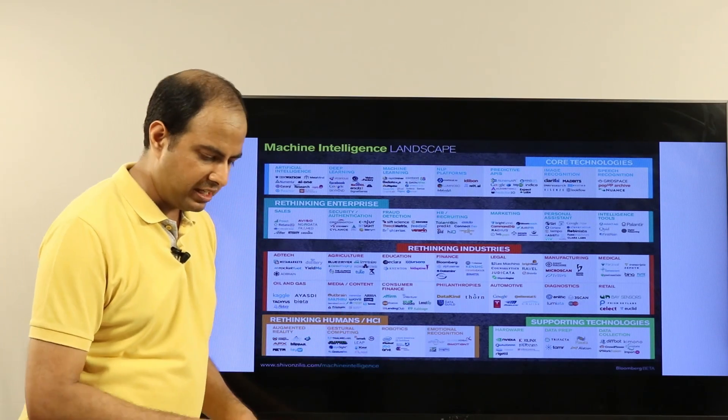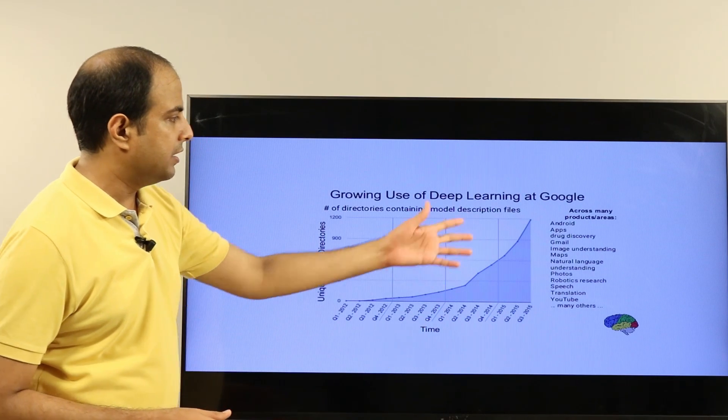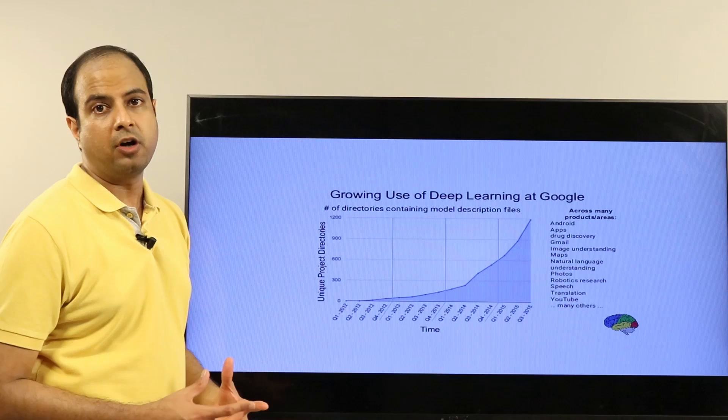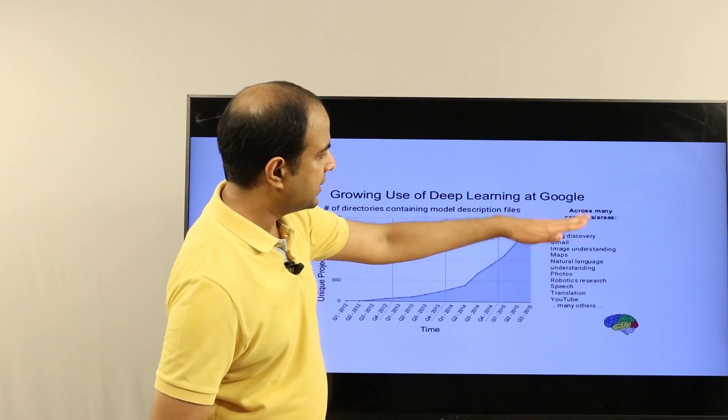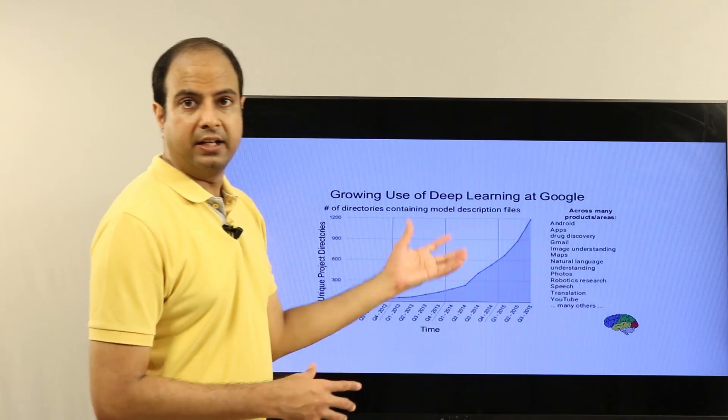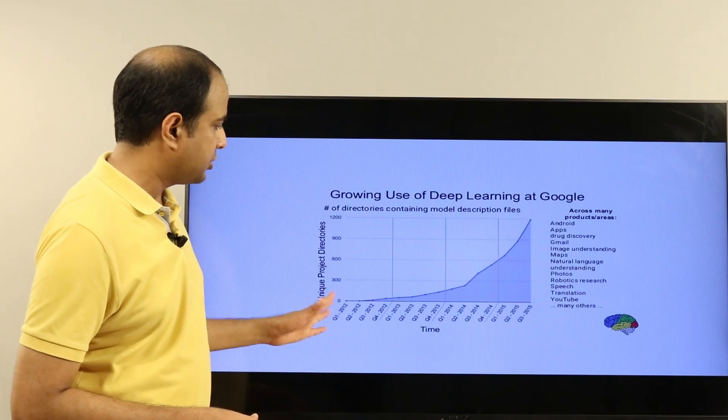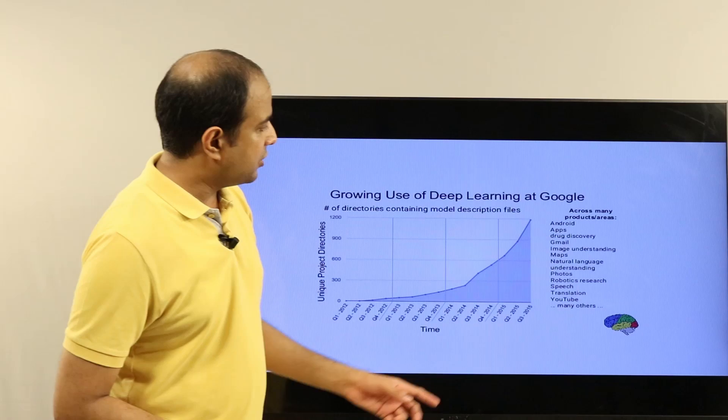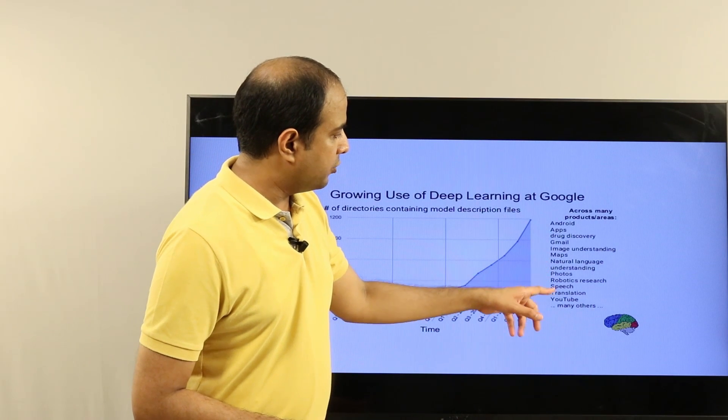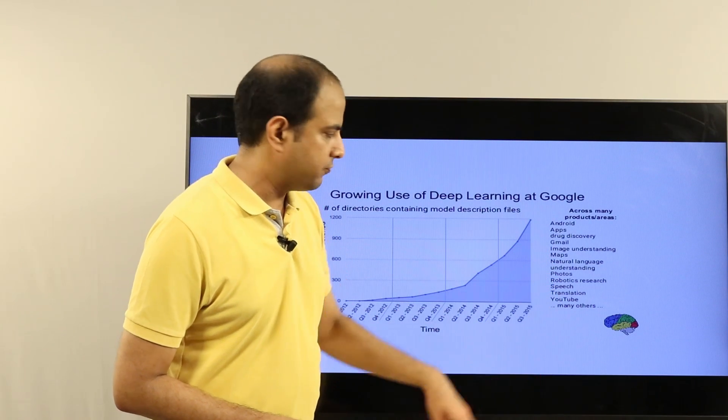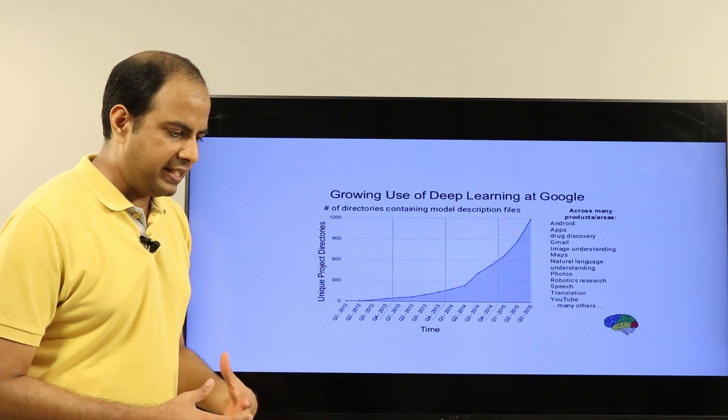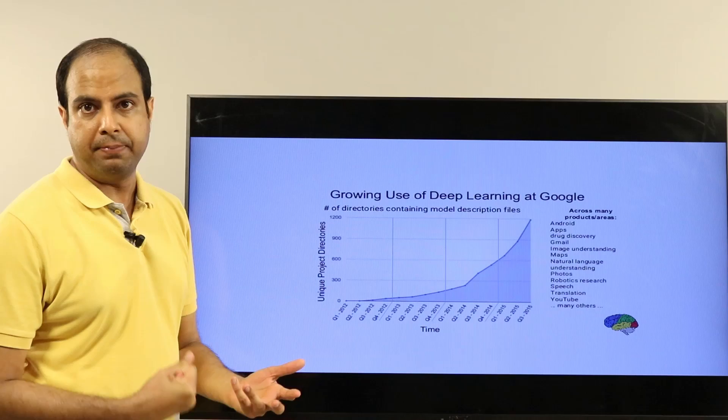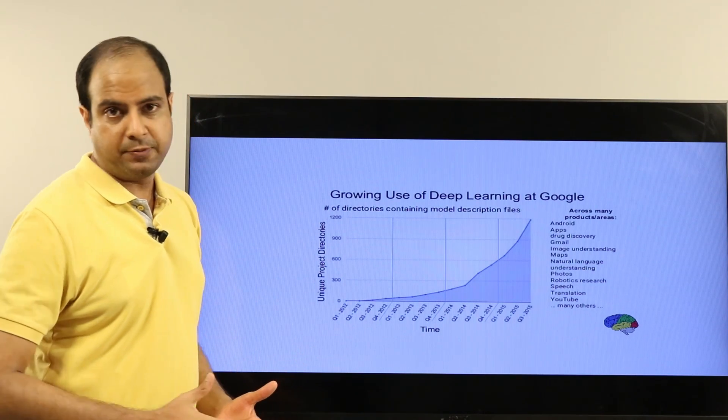On the other hand, typically people use deep learning for more cognitive tasks, more cognitively complex tasks. For example, this chart shows various product areas where Google has been using deep learning across time. Investments in deep learning have been increasing everywhere, even at Google. For doing natural language understanding, for vision tasks, for speech tasks which are inherently quite complicated, quite cognitively complex—for those kinds of tasks, especially if you have large amounts of data, you would use deep learning.